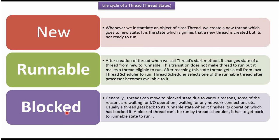Generally, threads can move to blocked state due to various reasons. Some of the reasons are waiting for IO operation, waiting for any network connections, etc. Usually, a thread gets back to its runnable state when it finishes the operation which had blocked it. A blocked thread cannot be run by the thread scheduler — it has to get back to runnable state to run.